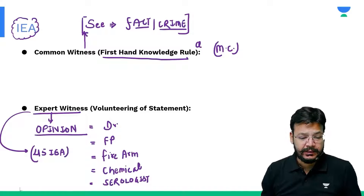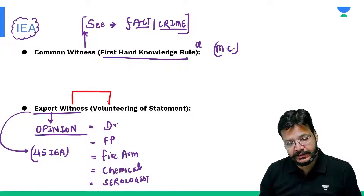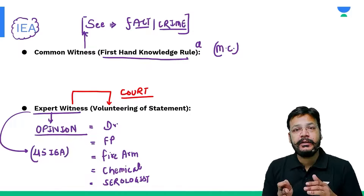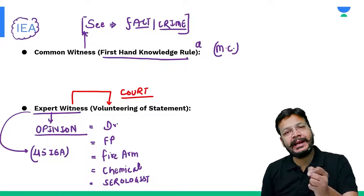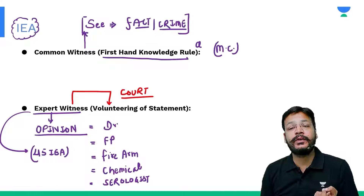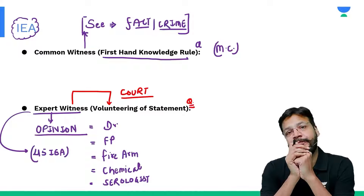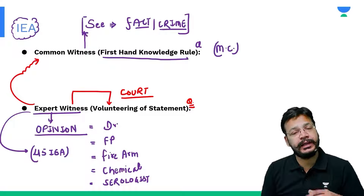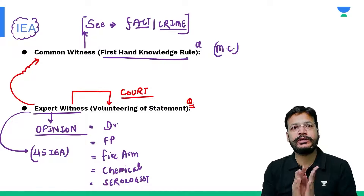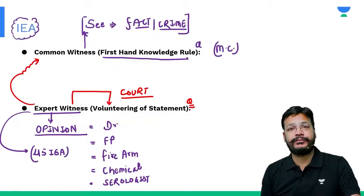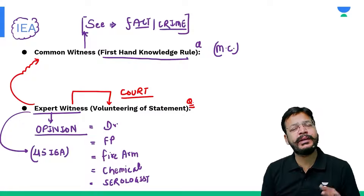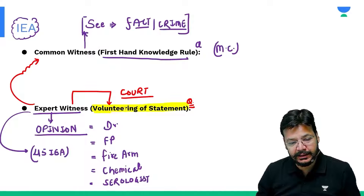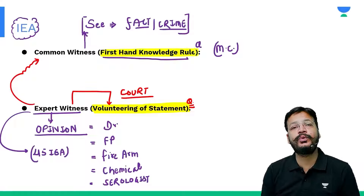What is the very important difference between common witness and expert witness? An expert witness, when going to court, can volunteer a statement — meaning with his will he can add some statement voluntarily. That is known as volunteering of the statement. So volunteering of the statement is done by expert witness only. Remember, an expert witness can also be a common witness, but a common witness cannot be an expert witness. For example, a doctor is an example of both expert witness and common witness. The answer can be both.